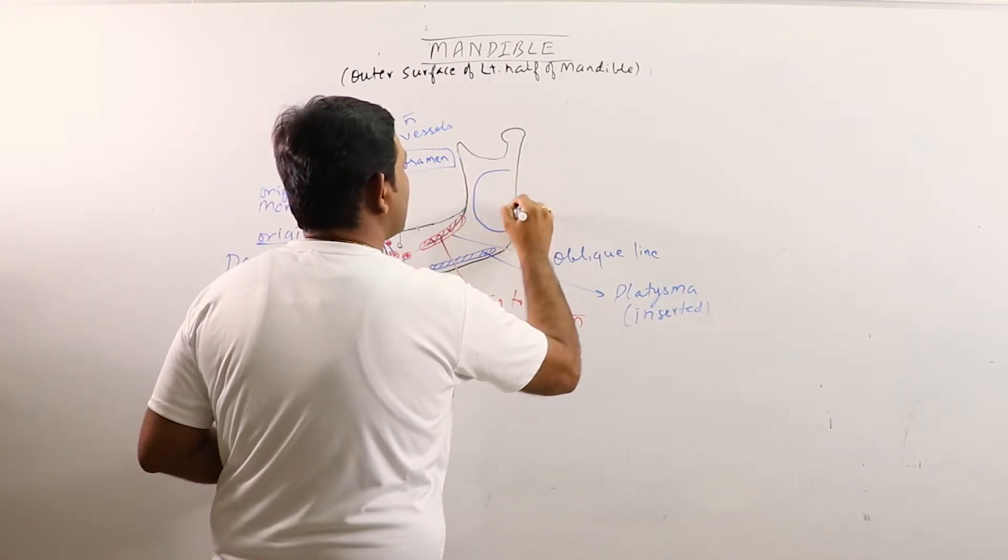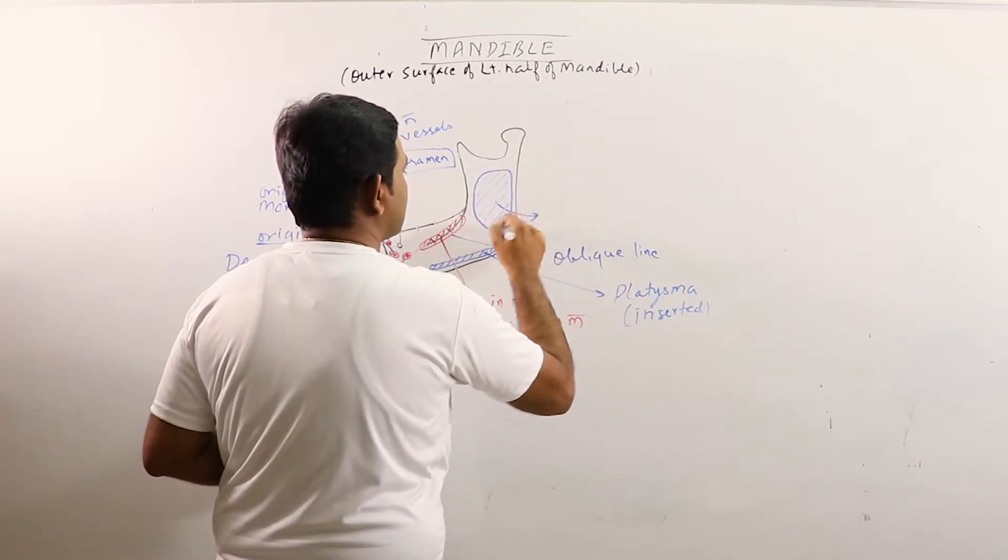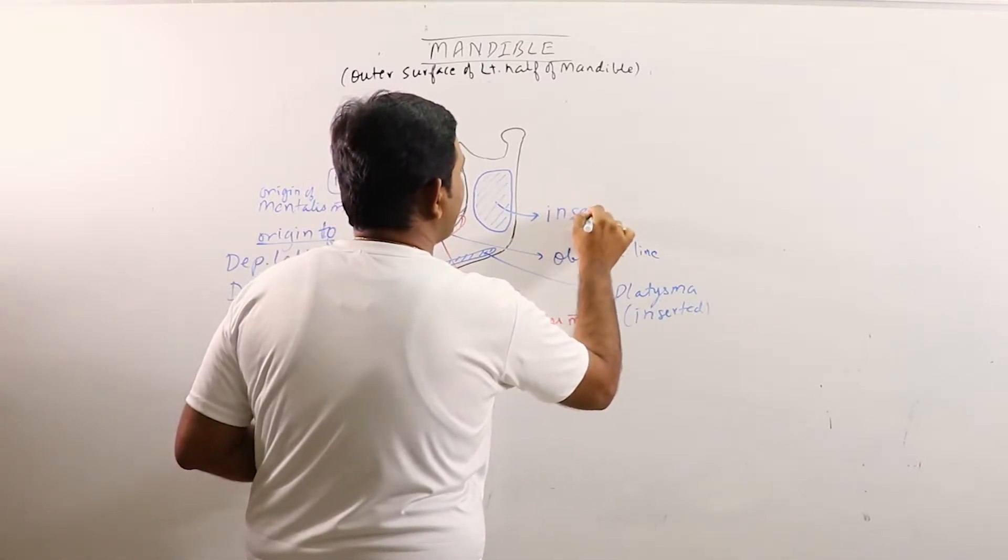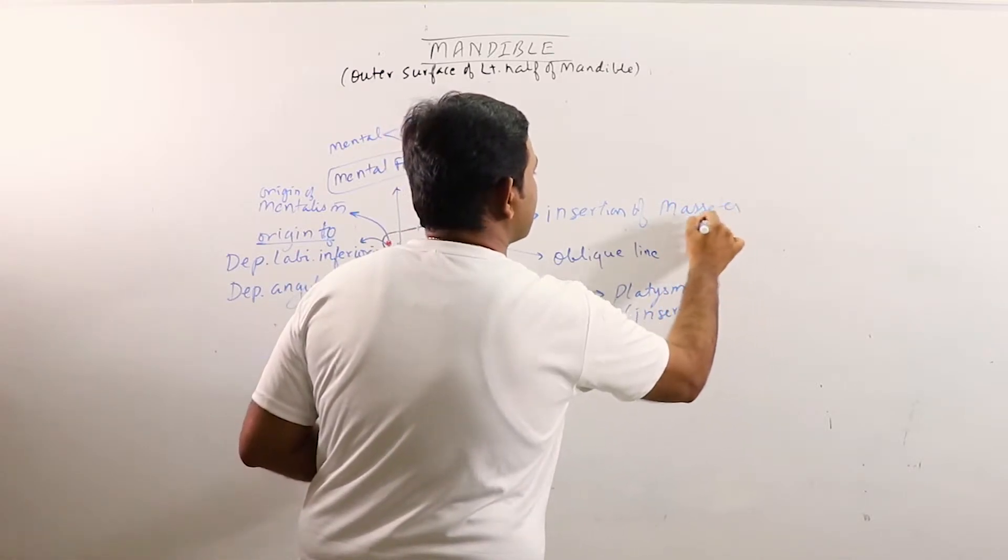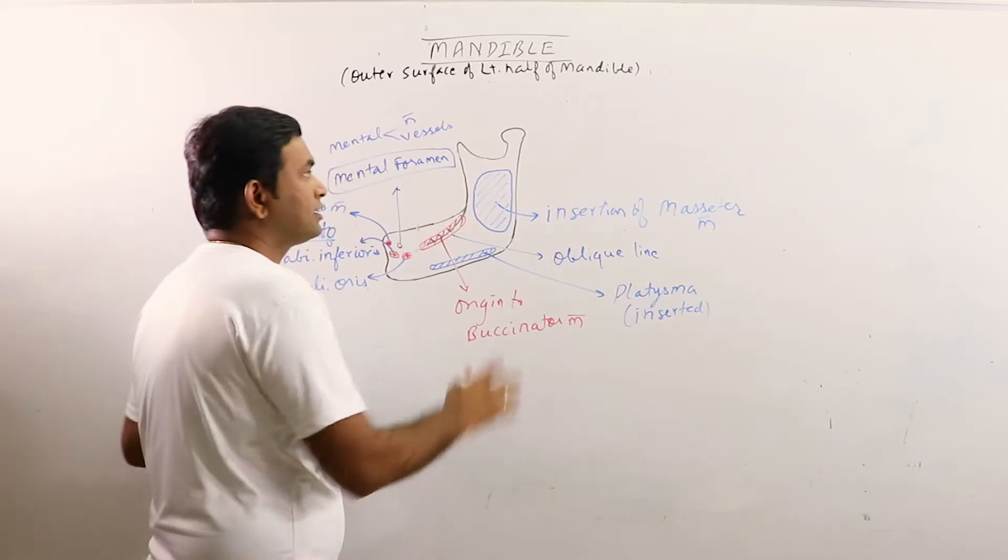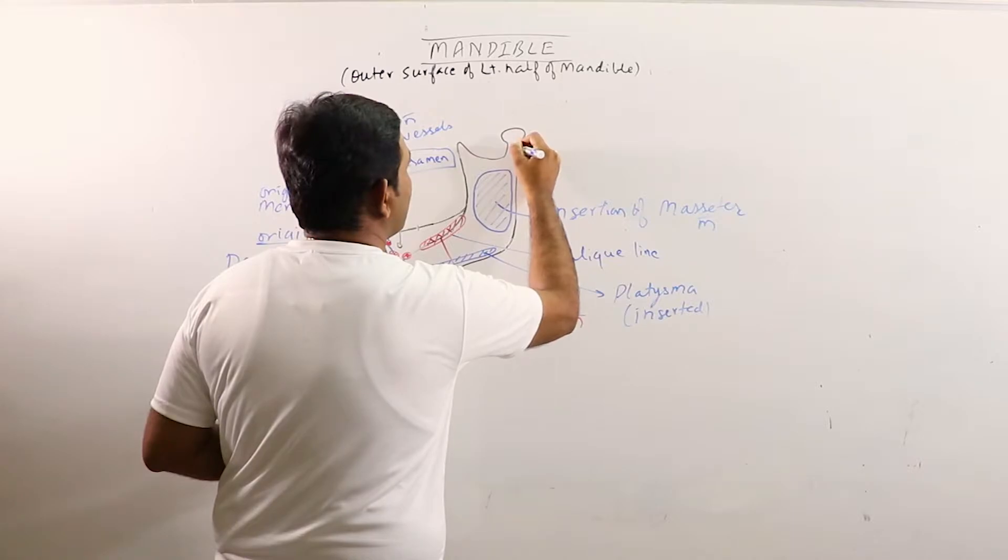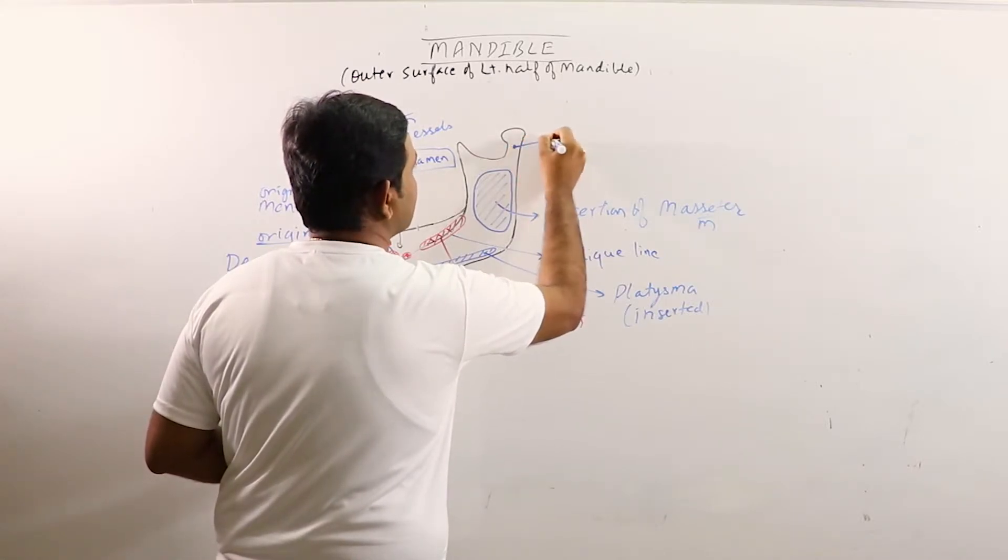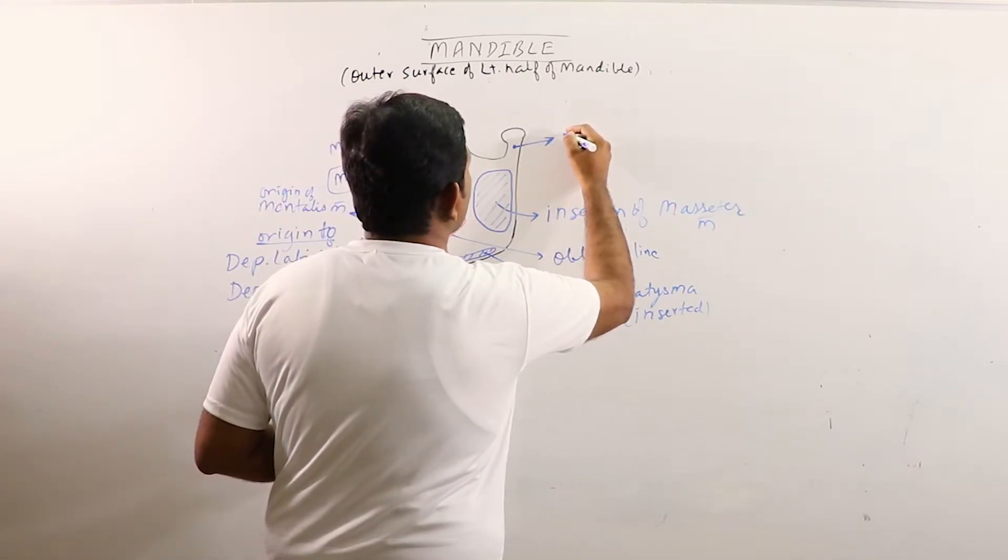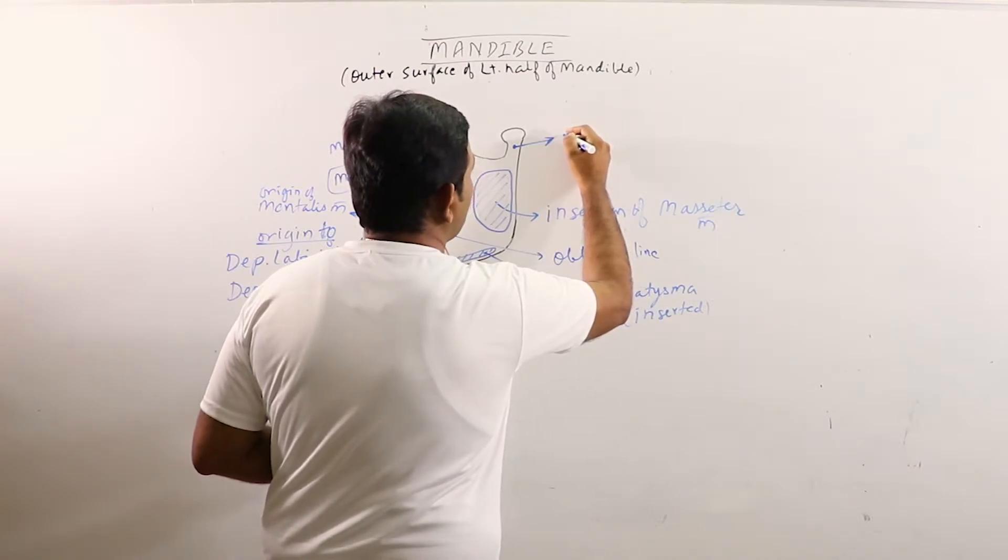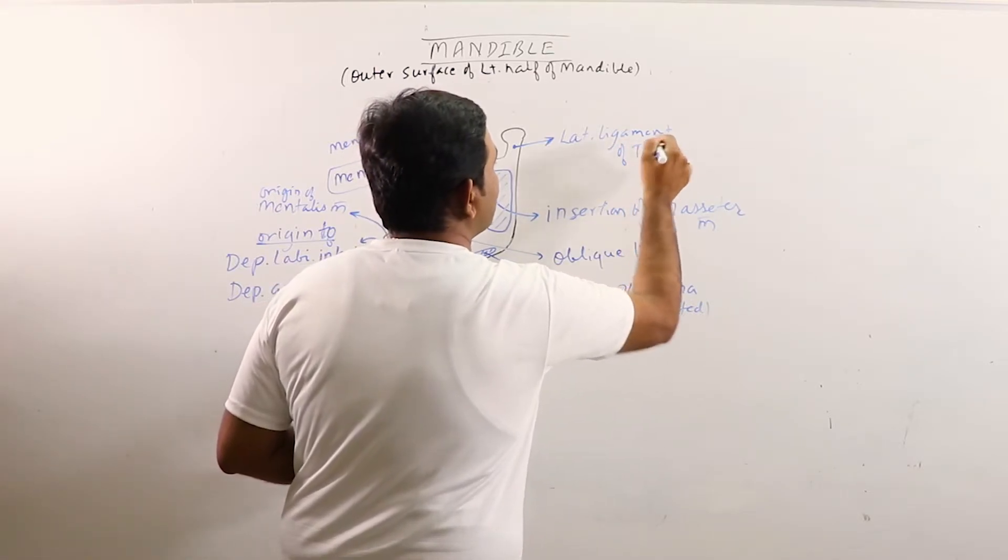Most of the lateral surface of ramus is meant for insertion of masseter muscle, except the posterior superior region. The lateral side of posterior superior region, the neck, is the site for attachment of lateral ligament of temporomandibular joint.